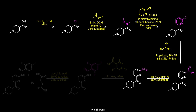The next step was a Buchwald-Hartwig reaction employing benzophenone imine, followed by acidic deprotection, to provide the primary aryl amine in 82% yield over two steps. This two-step transformation is of special interest to medicinal chemists, because it allows the facile conversion of a 2-chloropyridine to the corresponding 2-aminopyridine — basically, it allows you to swap a chlorine atom with a nitrogen atom at the alpha position of the pyridine.